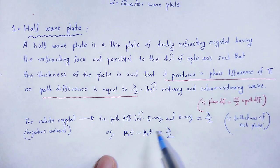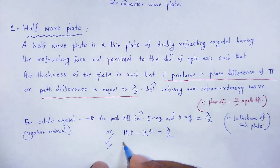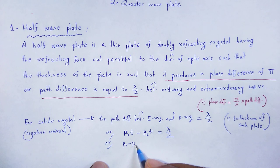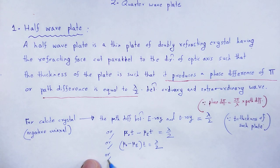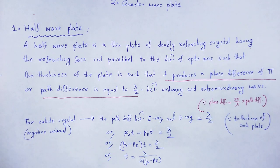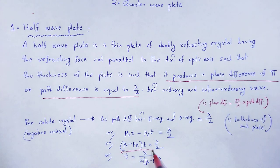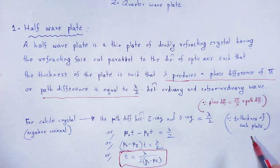Here μ₀ is the refractive index of the O ray and μE is the refractive index of the E ray. Therefore: (μ₀ − μE) × t = λ/2, so the thickness is t = λ / [2(μ₀ − μE)]. This is the thickness of the retardation plate which is called the half wave plate.